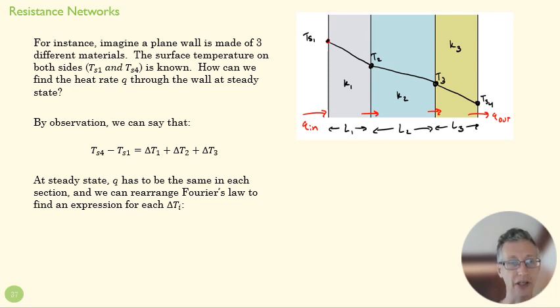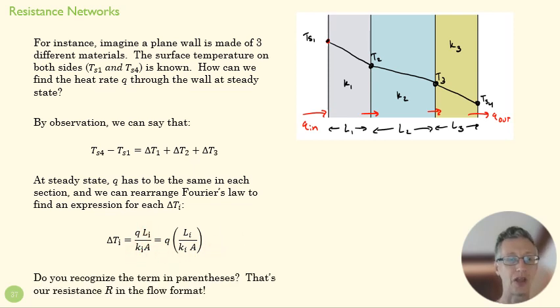All this is here is a rewriting of our conduction rate equation in which we isolate our delta T, and then we can recognize that these guys here—that is our resistance—are in the flow format. So L is going to increase our resistance, contact area is going to decrease it, and a high conductivity coefficient is also going to decrease that resistance.